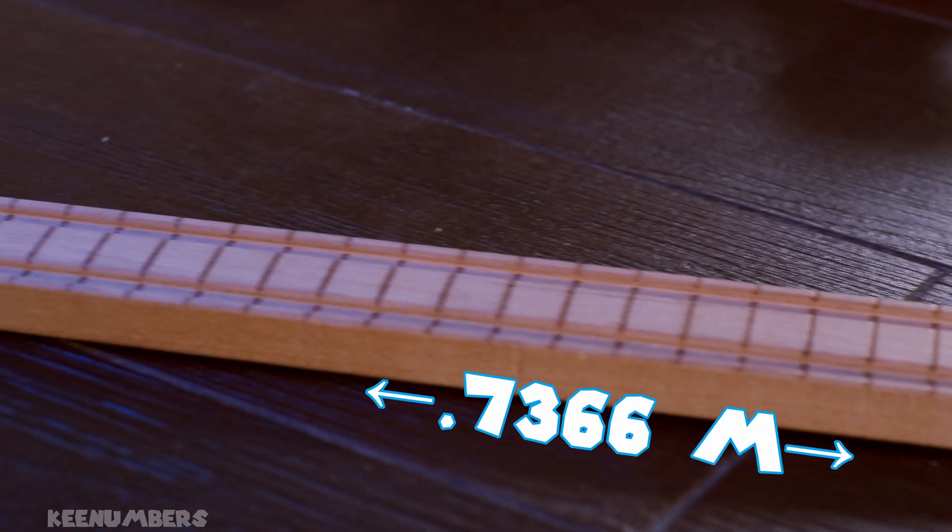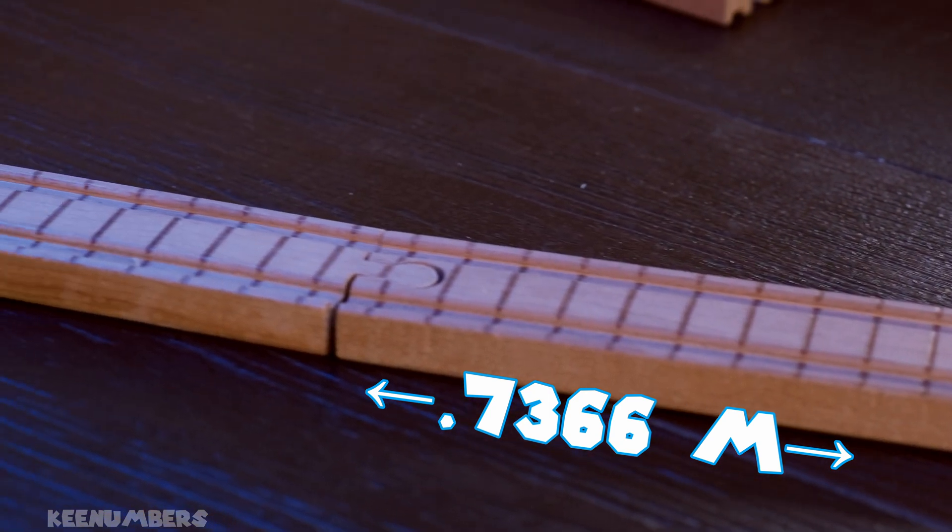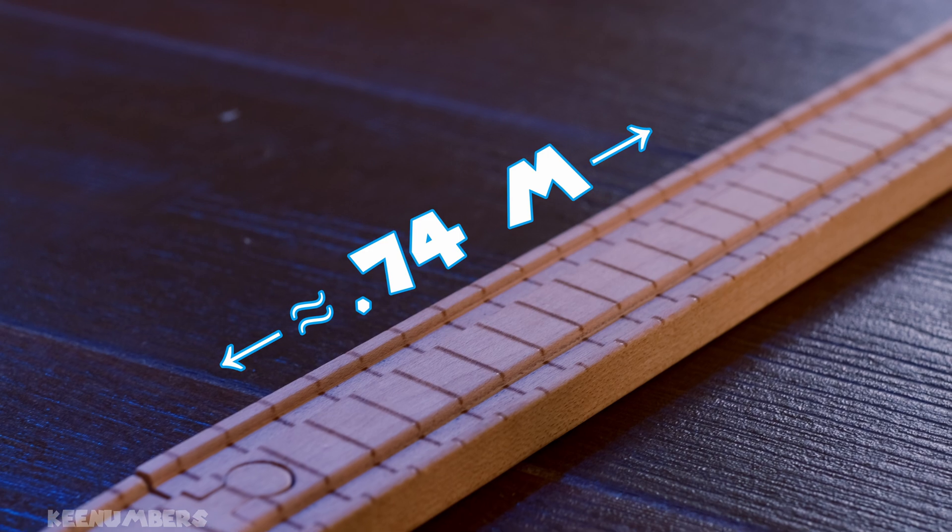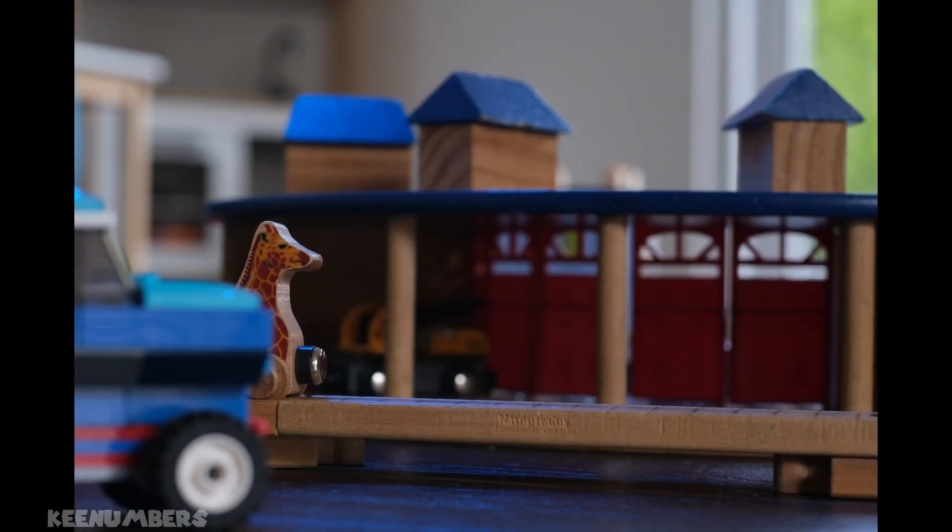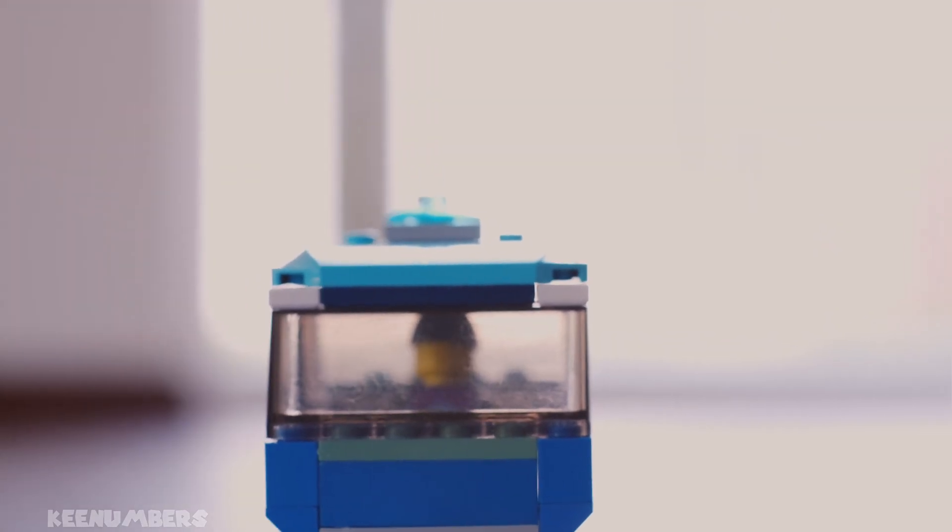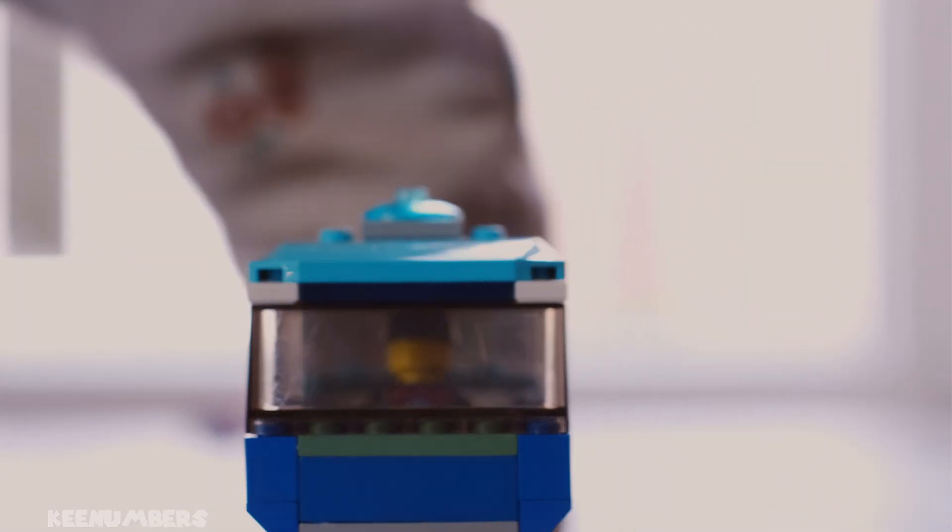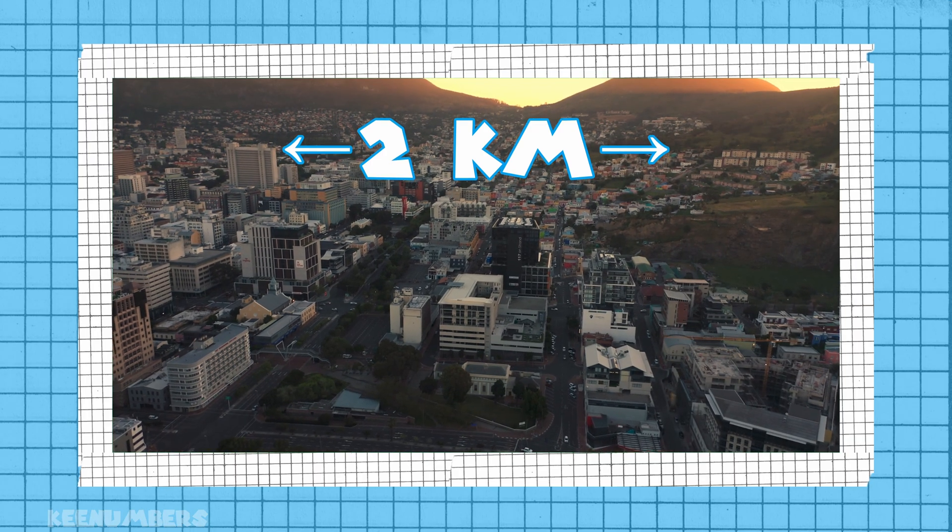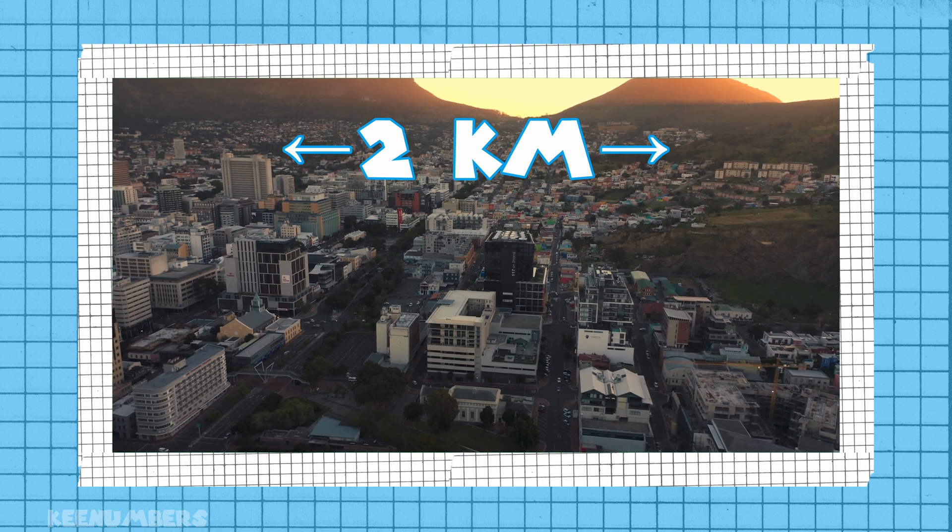About 0.7366 meters. You could round up and say it's about 0.74. Let's look at this city skyline here. It is two kilometers wide.